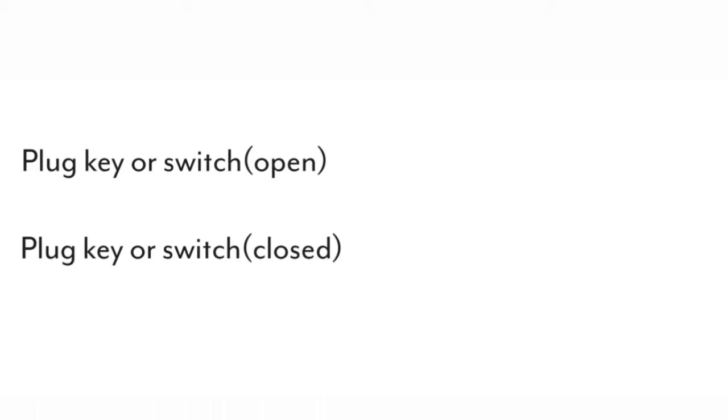Switch in off position: It is shown as a slanted line on one end and a circle at the other. When the switch is closed, it is in the on position. There is no gap and the circuit is said to be a closed circuit.